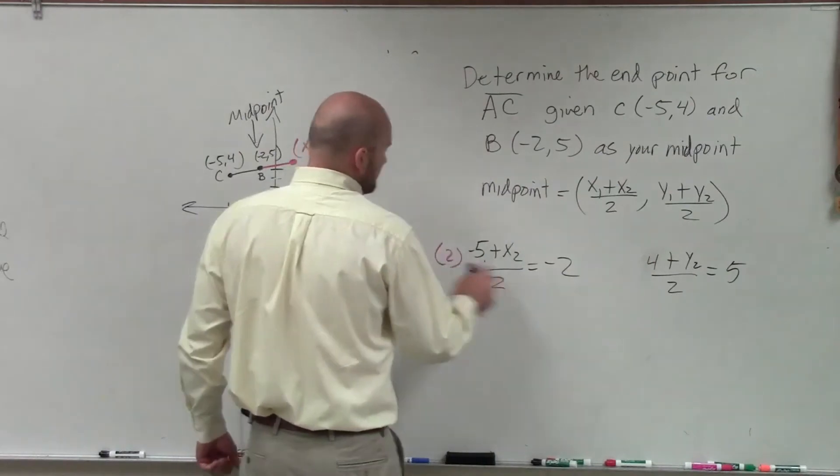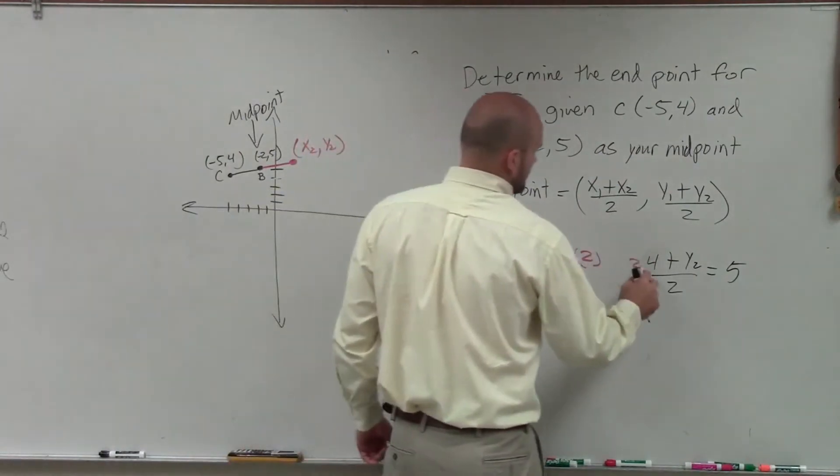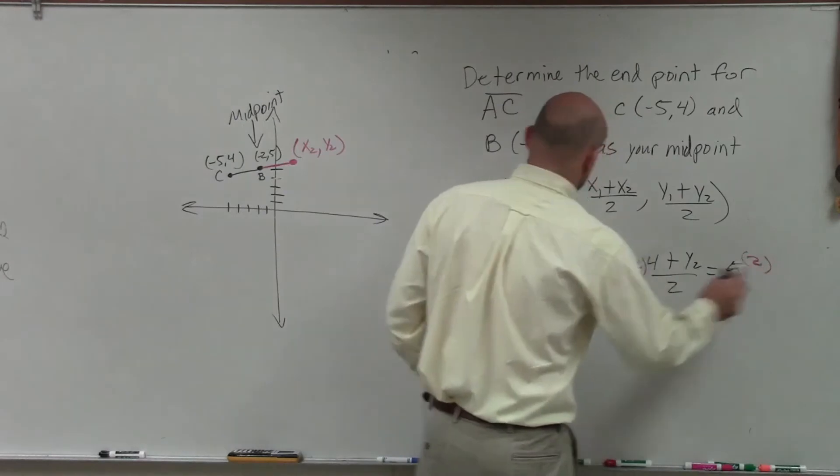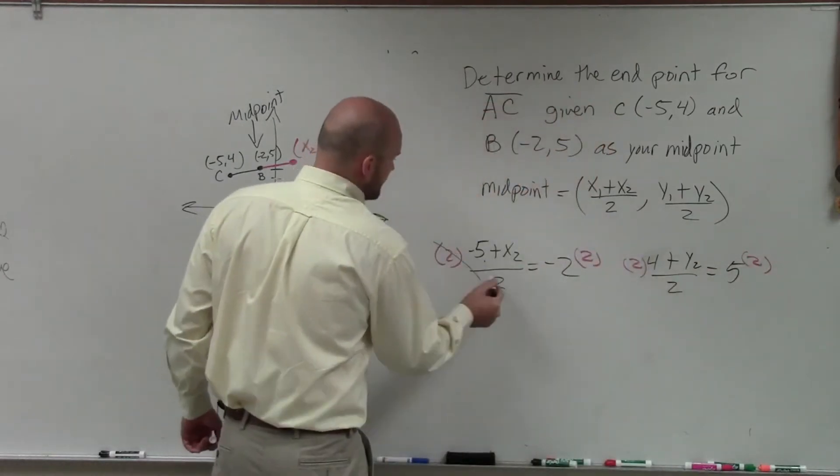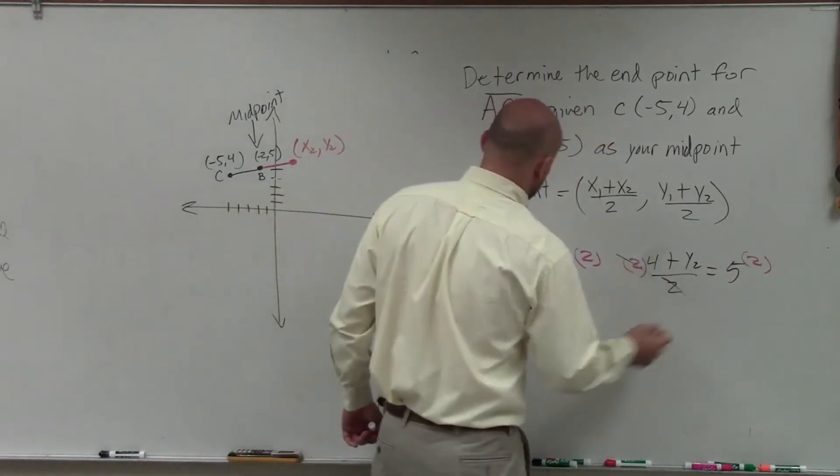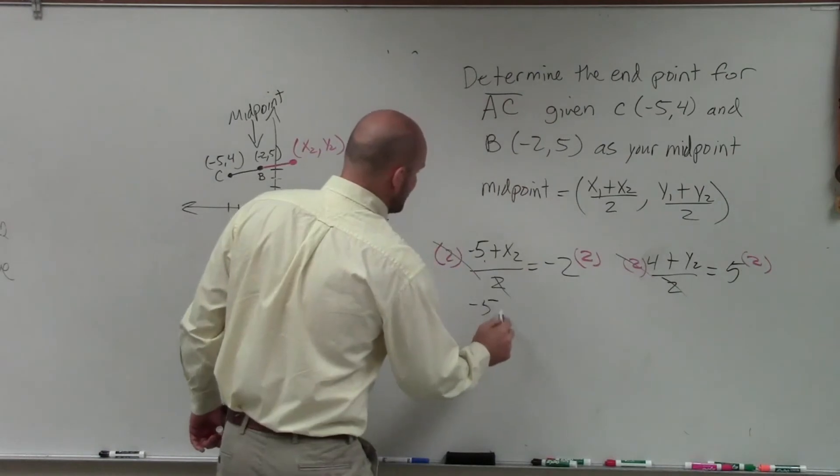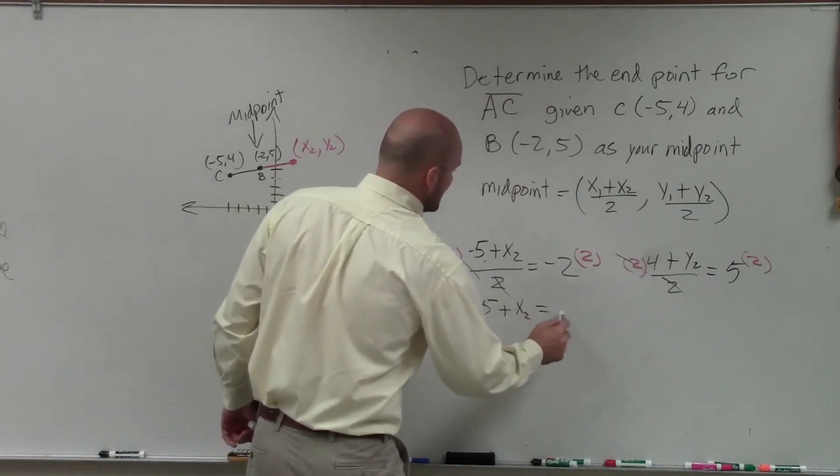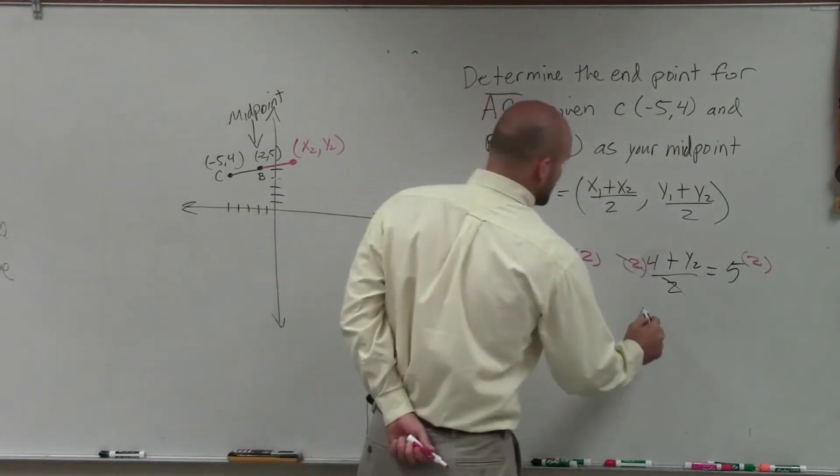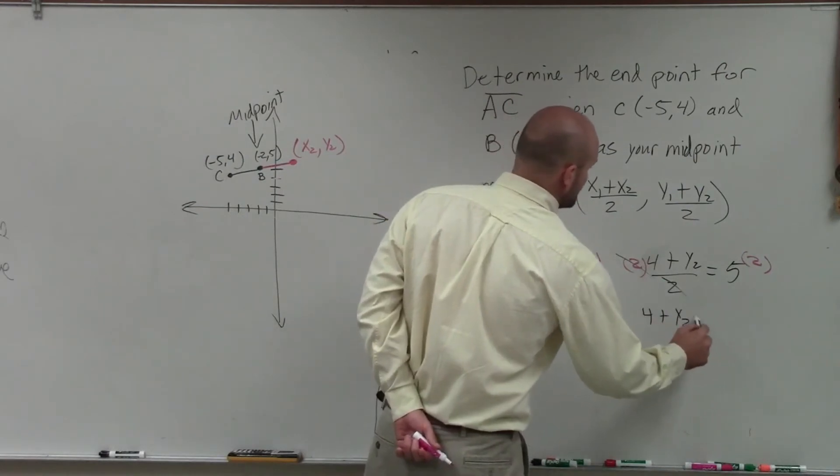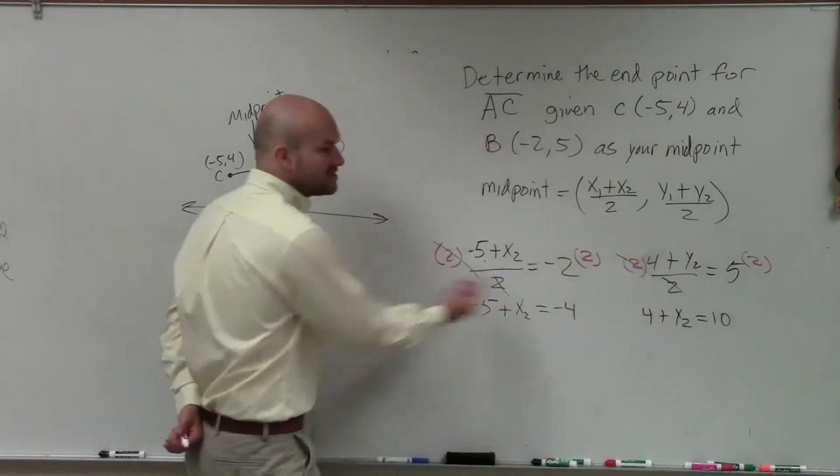So to do that, I need to get the 2 off the denominator. So I multiply 2 on both sides. Therefore, now those divide to 1, those divide to 1. So I'm left with a negative 5 plus x2 equals negative 4.